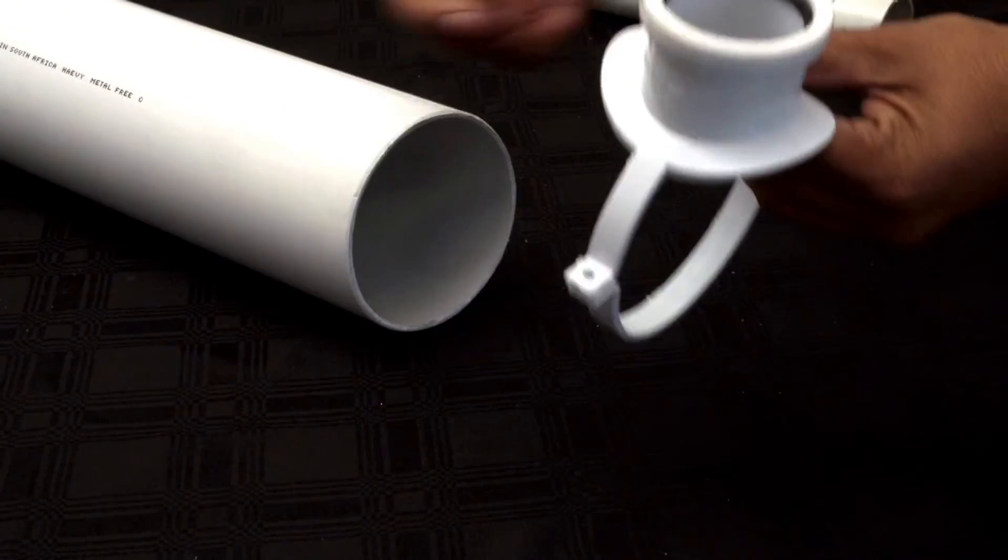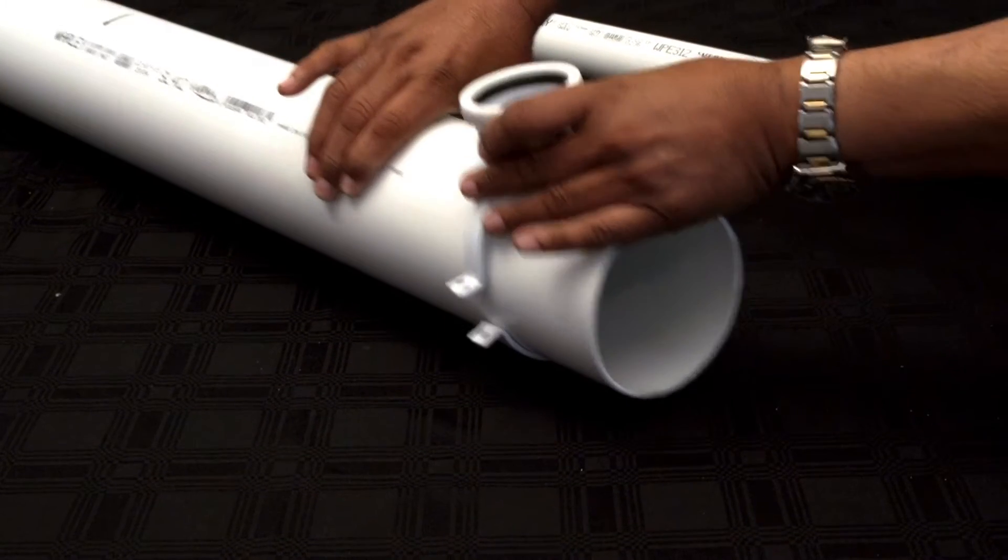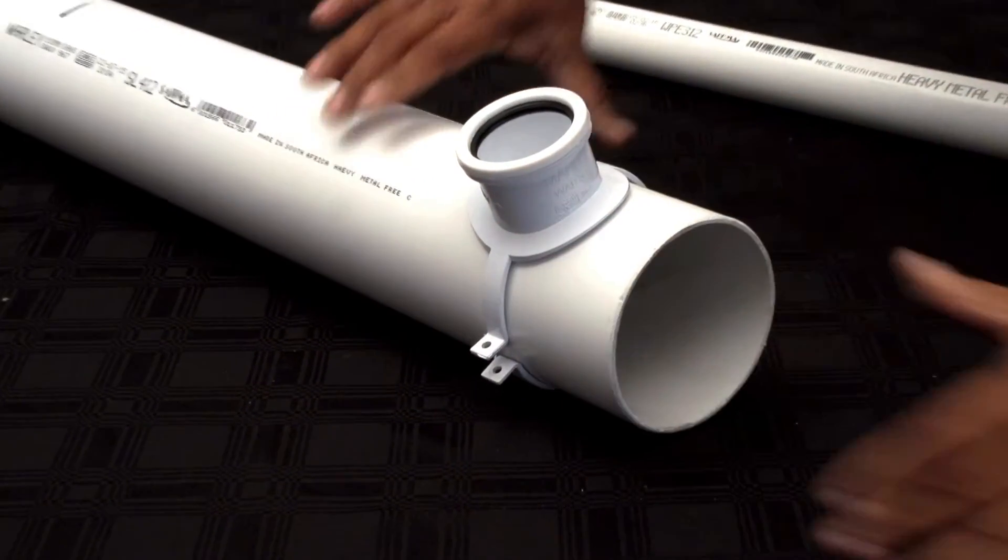Place the saddle over the pipe so that the flow direction markings on the fitting correspond to the actual direction of flow on the main line.